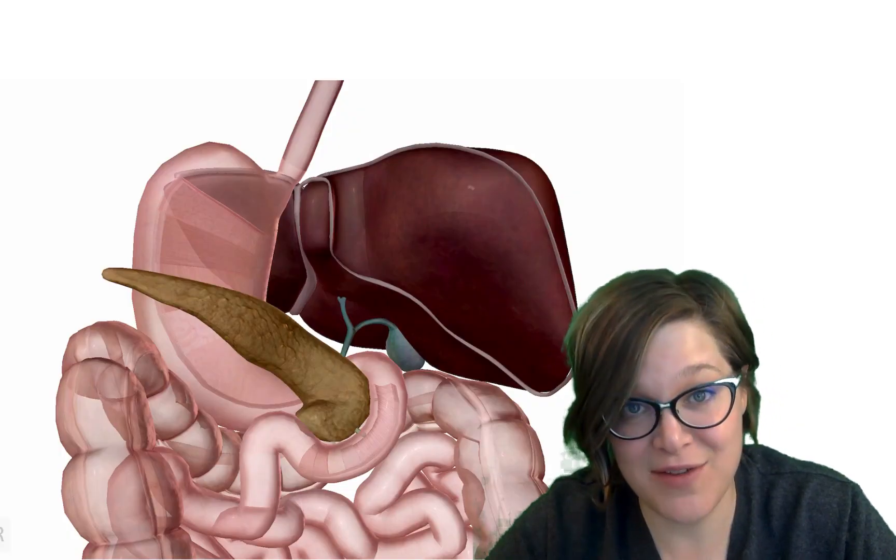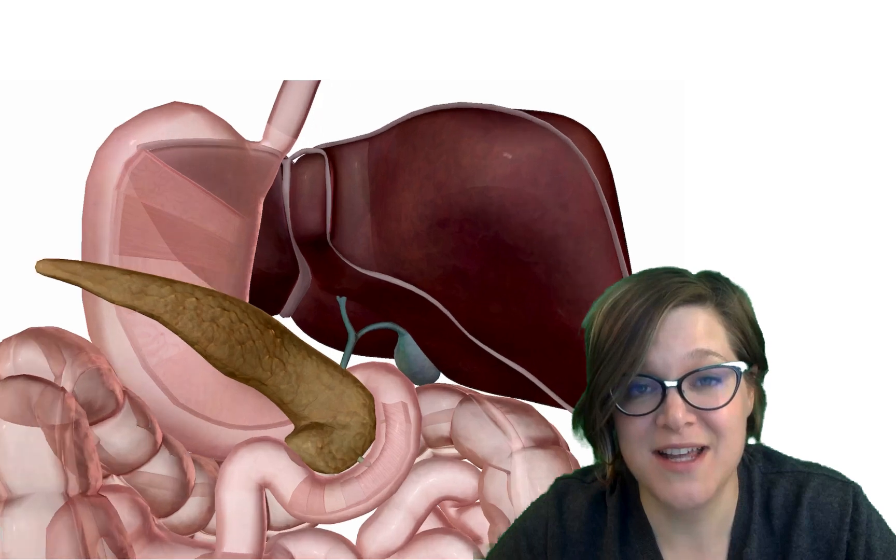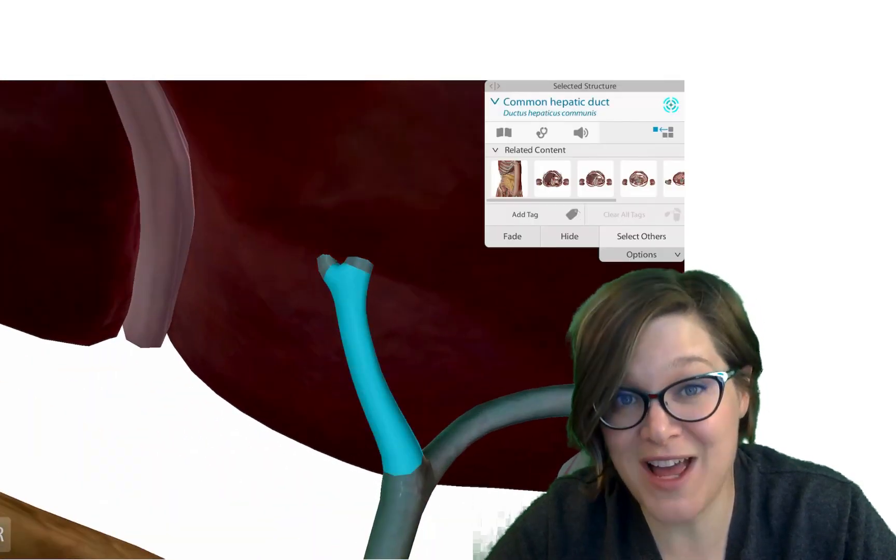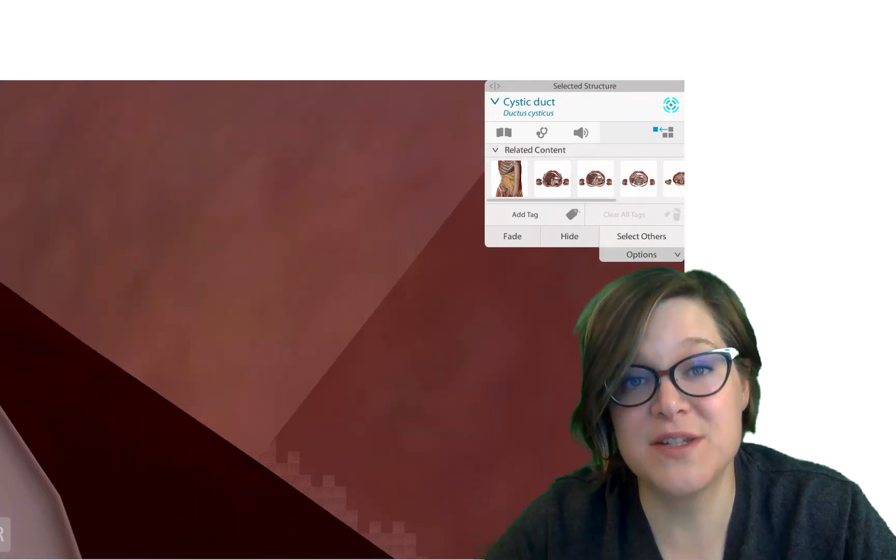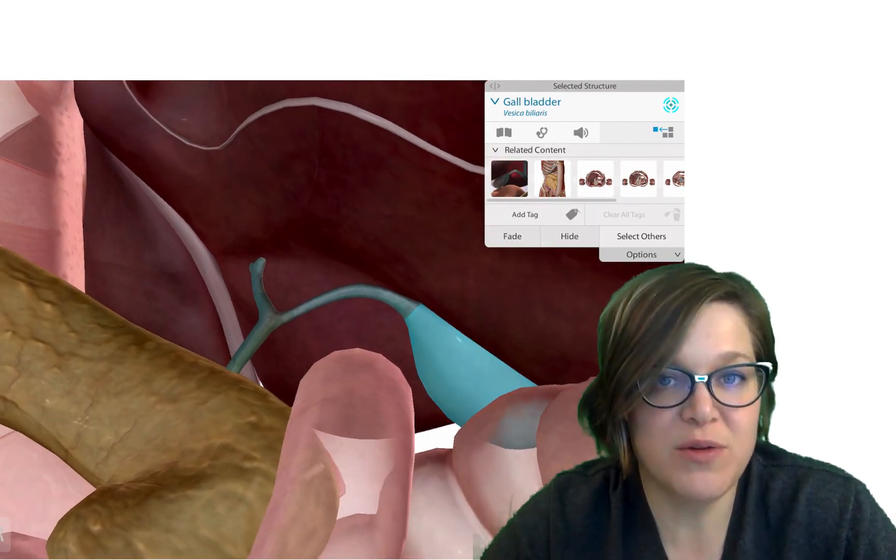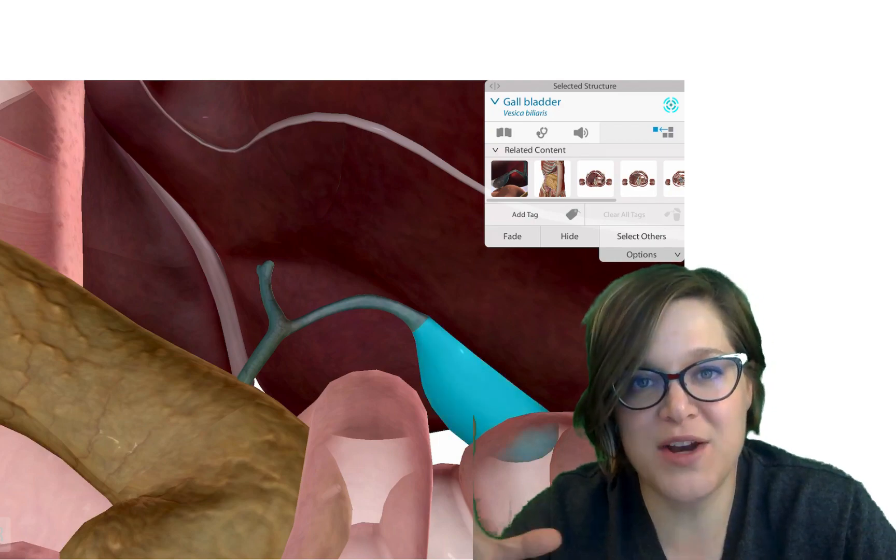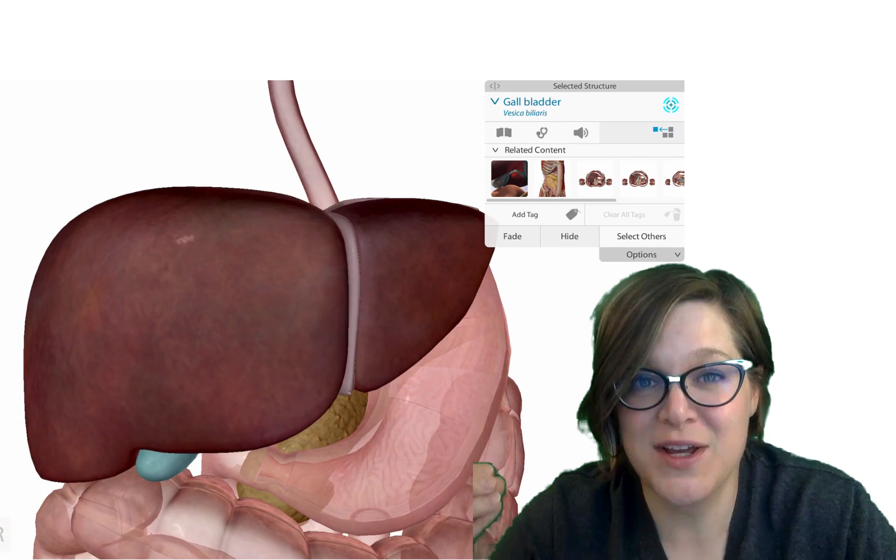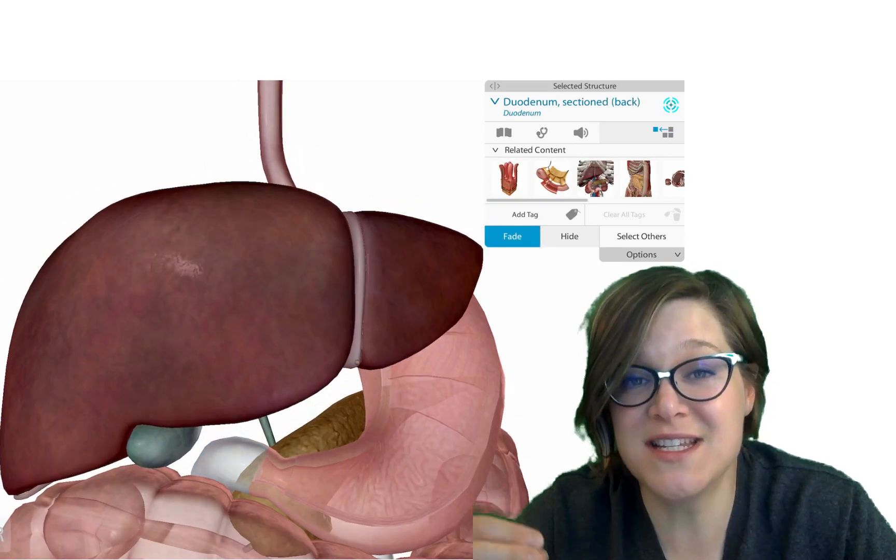The bile then exits the liver through the hepatic duct. It goes through the common hepatic duct to the cystic duct, which goes to the gallbladder. In the gallbladder, that bile is going to be concentrated. Why are we concentrating it? Well, that way when you eat a fatty meal, that gallbladder is going to contract and it's going to release that bile into your duodenum. Once it's released into your duodenum, now you can digest fats.